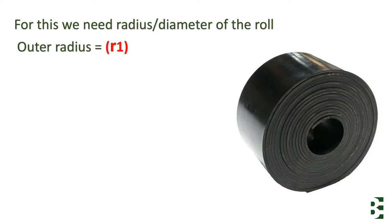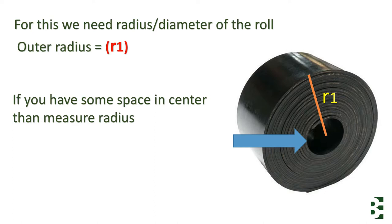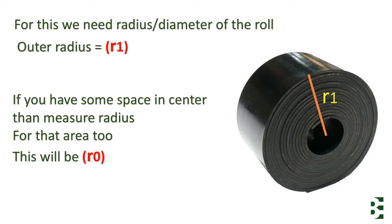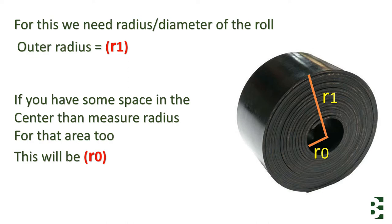We have the outer radius and I will consider R1. It's the outer diameter. You can see in the center we have a hole, it's empty here, there is no belt. I will consider this diameter and I will take the radius, it will be R0.